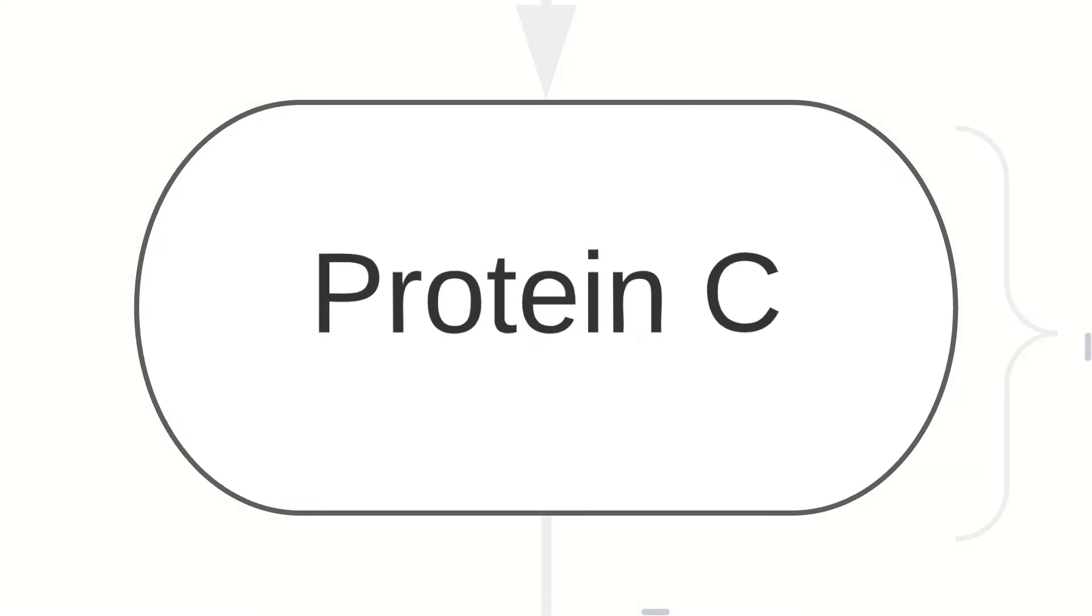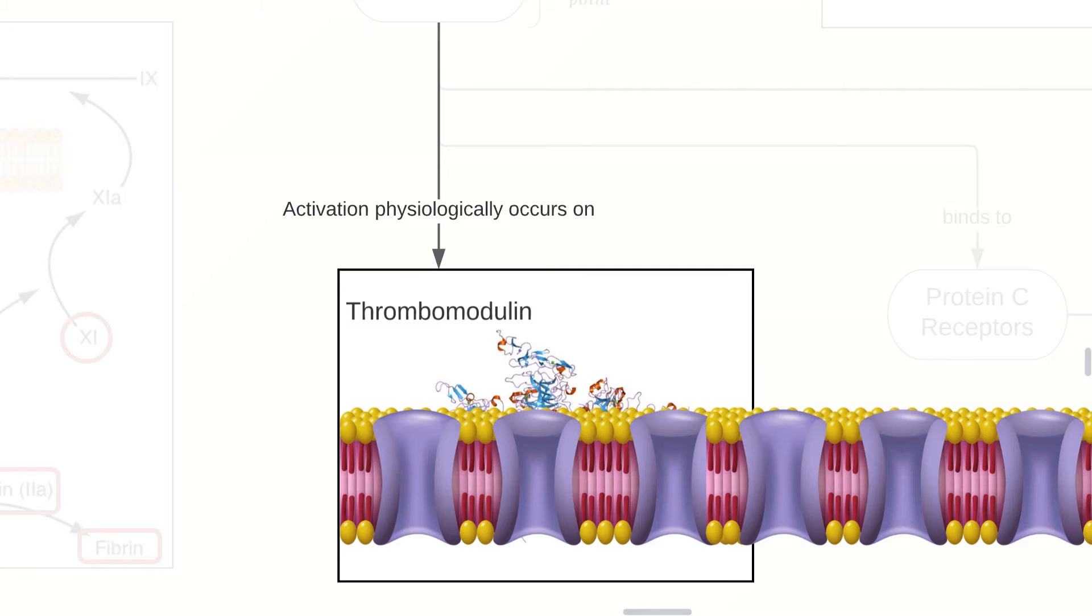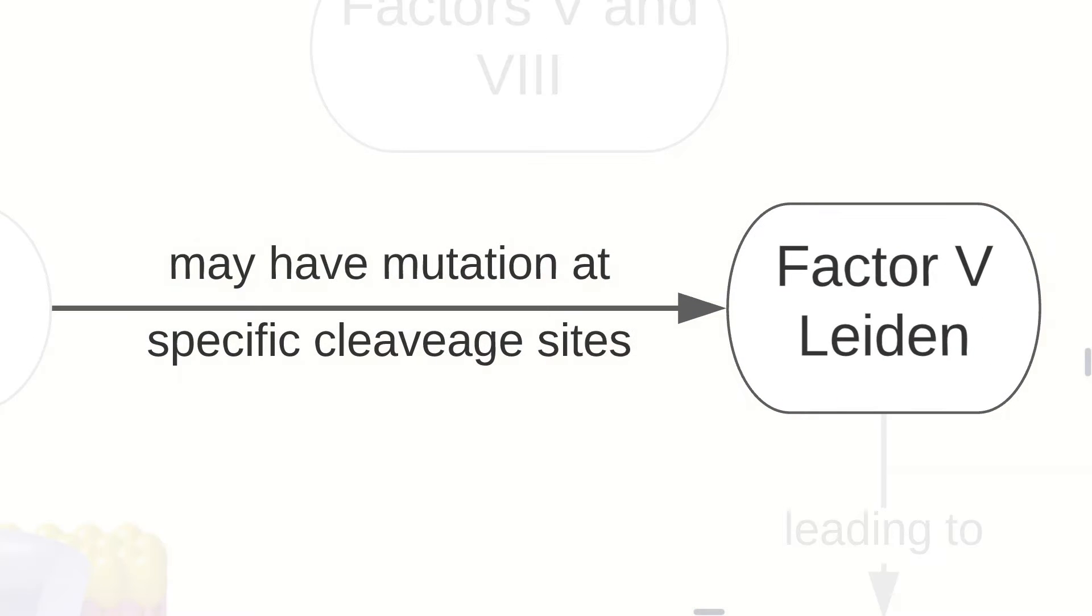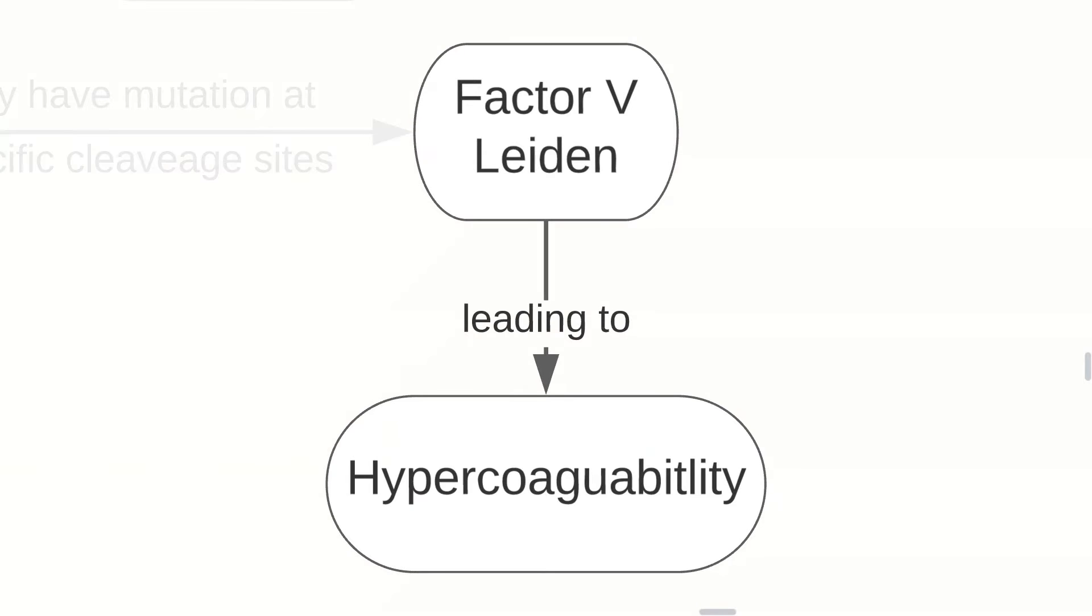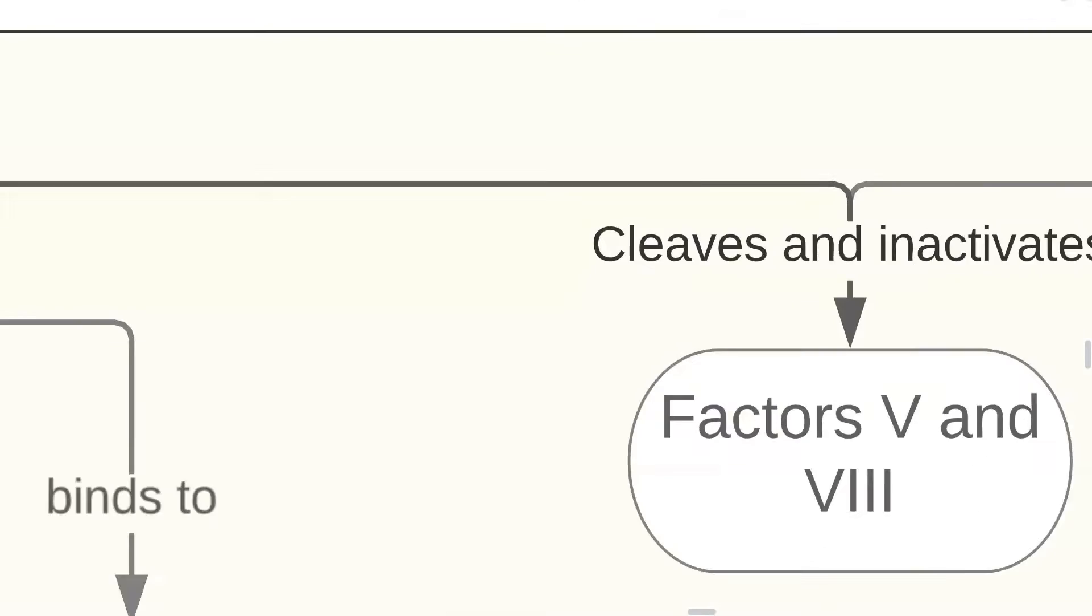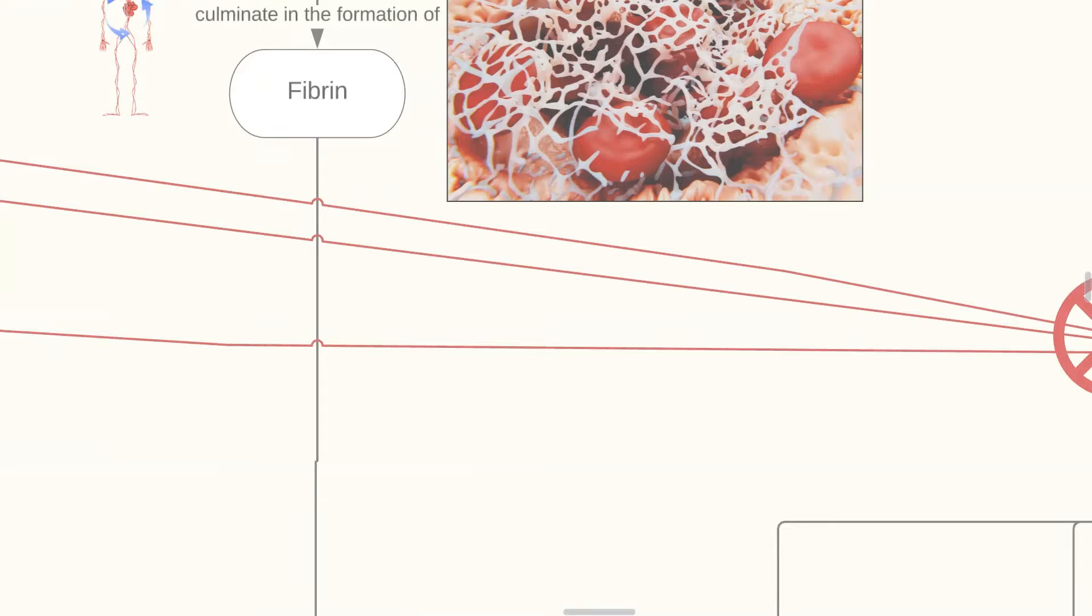Thrombin activates protein C, which becomes an anticoagulant at this point. Activation physiologically occurs on thrombomodulin, which is a transmembrane protein spanning the cell membrane. Protein C binds to protein C receptors, which may have mutation at specific cleavage sites, such as factor V Leiden, leading to hypercoagulability. Protein C cleaves and inactivates factors V and VIII with the aid of protein S, which undergoes vitamin K-dependent post-translational modification.